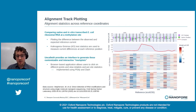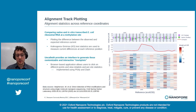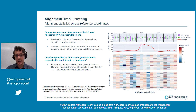Another type of visualization Uncalled4 can produce are track plots, which show alignment statistics over reference coordinates. Here we're looking at E. coli ribosomal direct RNA sequencing data, with in vitro transcribed RNA with modifications removed and natively transcribed RNA containing a known modification. This panel shows a KSAD statistic measuring the difference in current distributions between the two samples, which is a common way to detect modifications in Nanopore data.